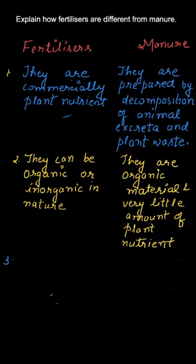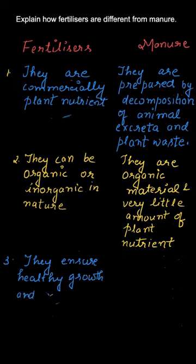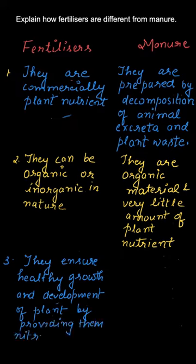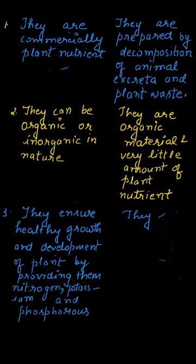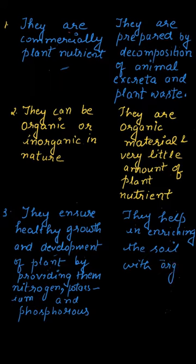Now let us go for the third distinguishing point between fertilizers and manure. Fertilizers ensure healthy growth and development of plants by providing nitrogen, potassium, and phosphorus. On the other hand, manure helps in ensuring that the soil has enough organic material and nutrients in sufficient quantity.